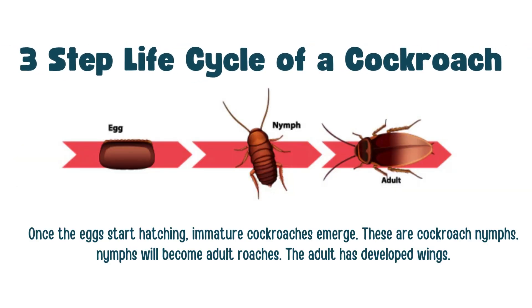Some insects, like the cockroach, have a three-stage life cycle: the egg stage, nymph stage, and the adult stage. The nymph is smaller in size, and the adult cockroach has developed wings.